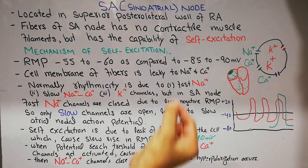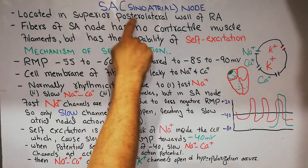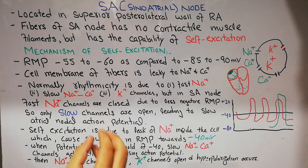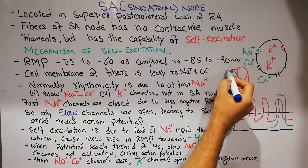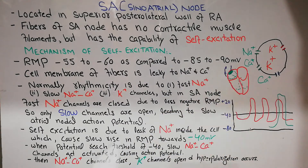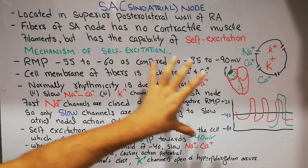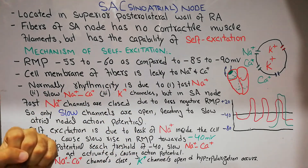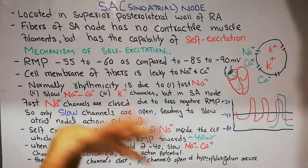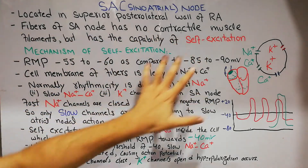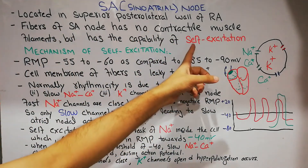The fibers of the SA node have no contractile muscle filaments but have the capability of self-excitation. The SA node is located in the superior posterior lateral wall of the right atrium just at the level of the opening of the superior vena cava. It has no contractile filaments — the SA node does not contribute to heart motility but contributes to the self-excitation process. Heart muscles can contract to pump blood, but SA node fibers cannot contract; they have the property of self-excitation.